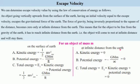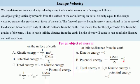At infinite distance from the Earth, the object has reached a height at infinite distance where there is no gravitational force. There, the kinetic energy will be zero because the object will come to rest. Potential energy is GMm/∞, and since the distance is infinity, this is also zero. Therefore total energy E2 equals kinetic energy plus potential energy, and both are zero, so E2 = 0.